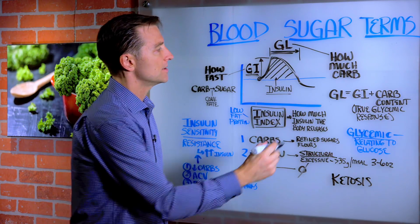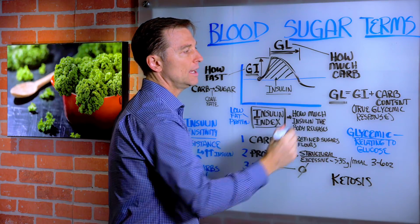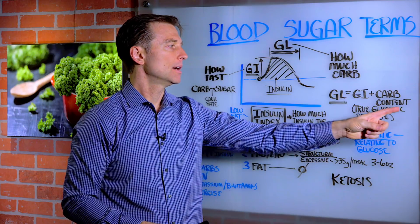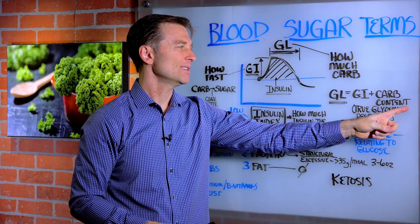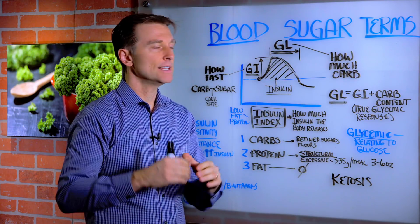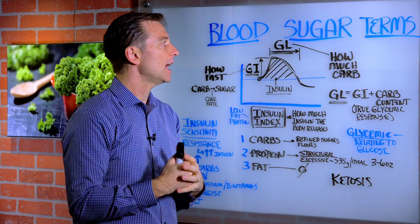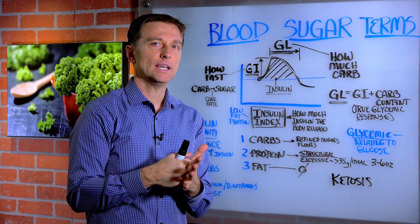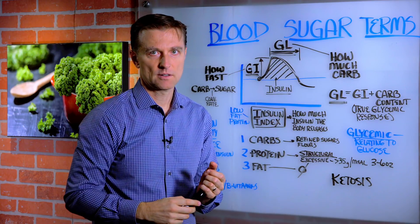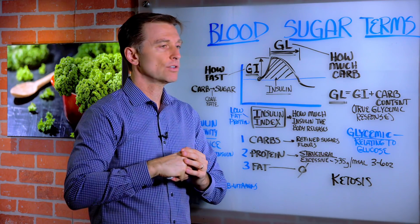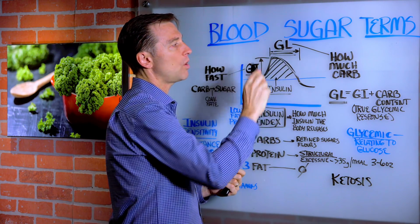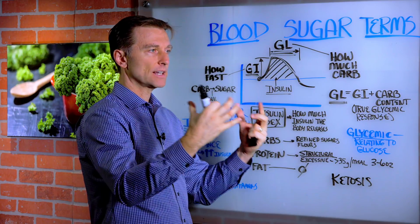The next term is glycemic load, which is a combination of the glycemic index and the carbohydrate content. It's also a scale. If something is very high on the glycemic load, it creates a long duration of spiked blood sugar. If something is low, it creates a little spike that comes down really fast. So it's the quantity of carbs and the duration of the effect it creates.